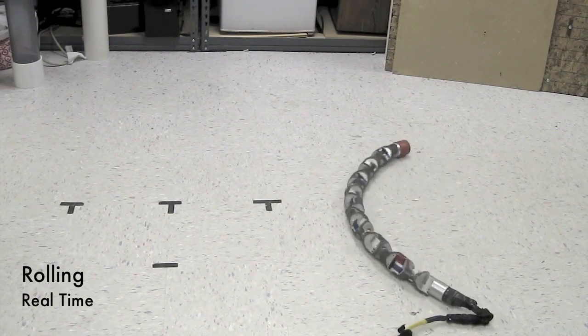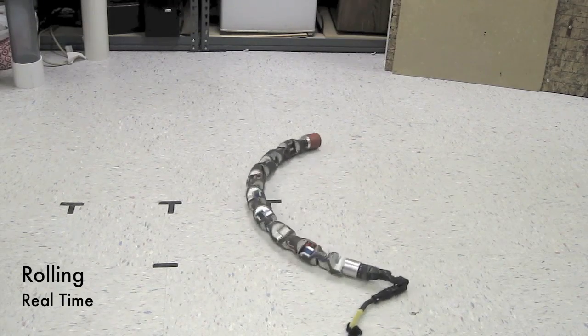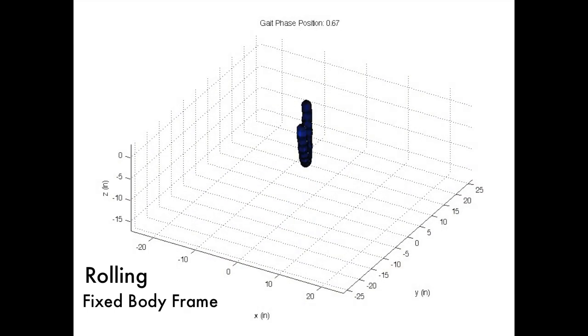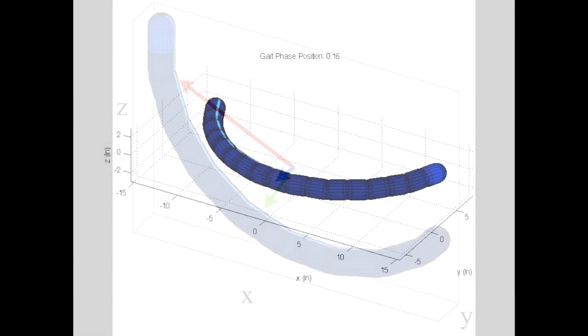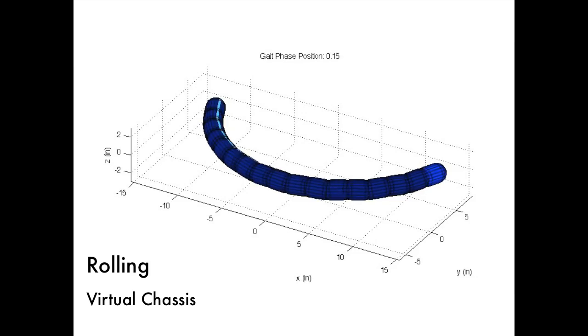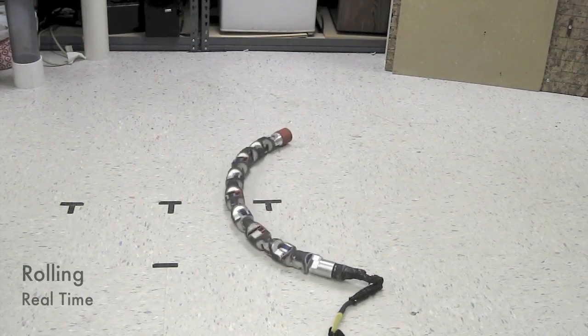A generalized procedure for computing the virtual chassis has been developed that uses singular value decomposition to find the principal components of the snake's shape in an online fashion. This allows the virtual chassis to be applied to any motion of the snake robot.